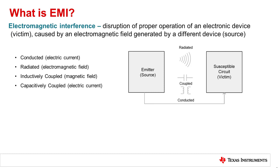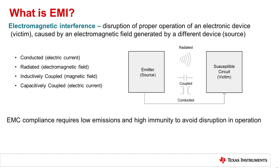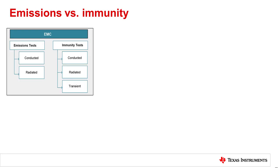To be EMC compliant, emissions must be low enough to avoid causing EMI disturbances to other devices in the environment, and immunity must be high enough to avoid disruption in operation due to EMI from other sources. Once a device is tested as EMC compliant, EMI should no longer be an issue during operation.